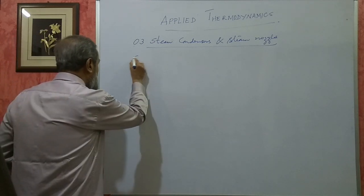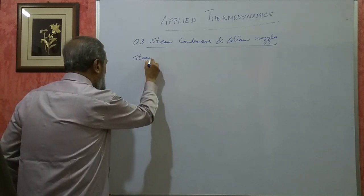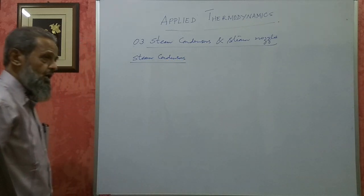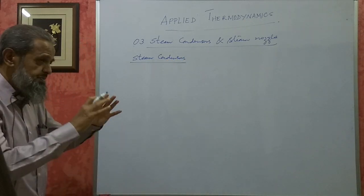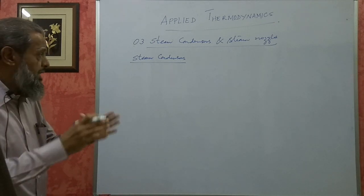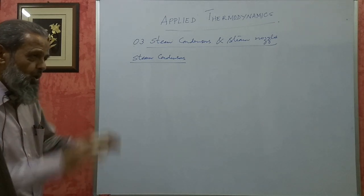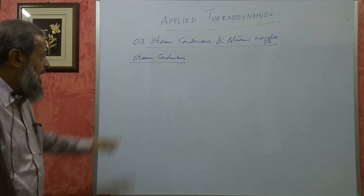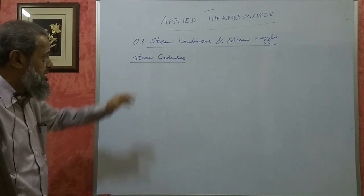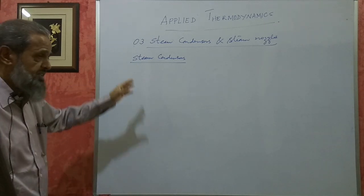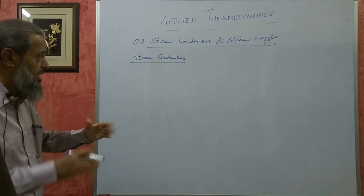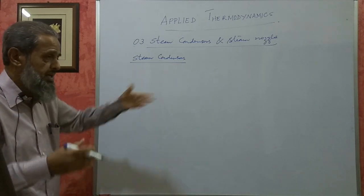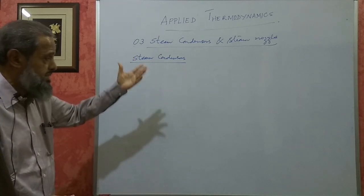First let us take up steam condensers. Steam condensers are closed vessels kept at a constant pressure below atmospheric pressure, that is vacuum pressure. The steam is discharged after its expansion in a turbine or any prime mover into these steam condensers.